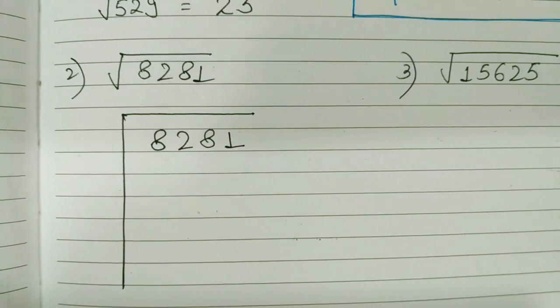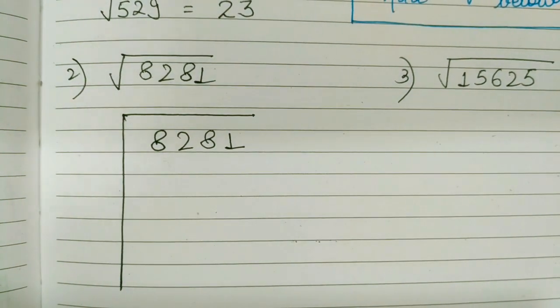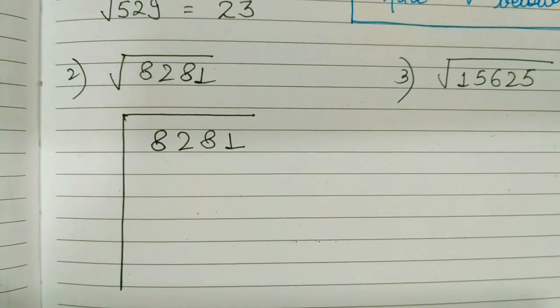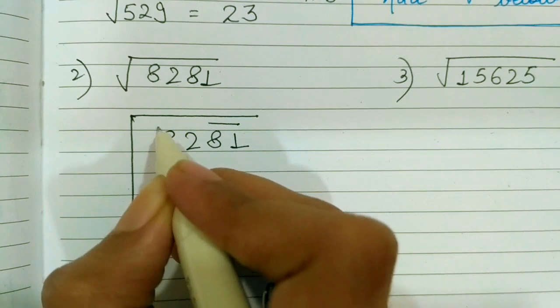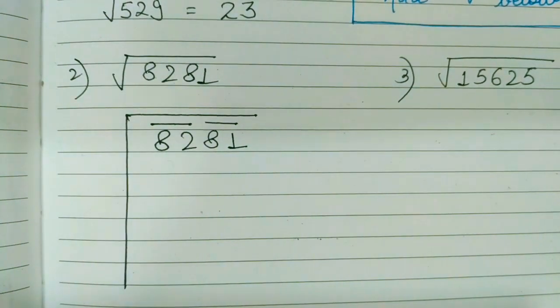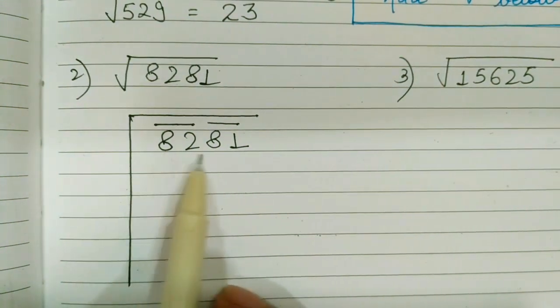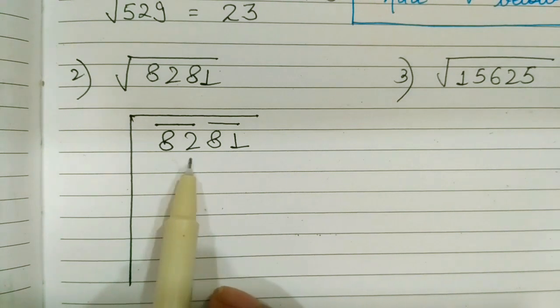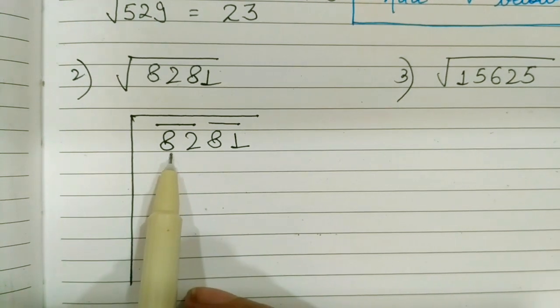Let's discuss some more examples. We have to find under root of 8281. First step is start making pairing from the one's end. So here I am going to make pairs.